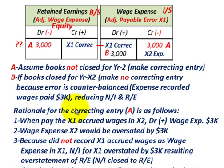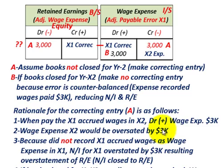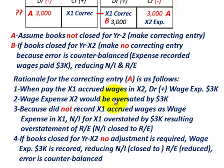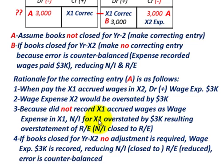The rationale for correcting entry A is as follows. First, when you pay the X1 accrued wages in year X2, you debit or increase wage expense by $3,000 in X2. Second, wage expense in X2 is overstated by $3,000 because it should have been recorded in X1. Third, because you did not record the accrued wages in X1, net income for X1 is overstated by $3,000, resulting in an overstatement of retained earnings — since net income is closed to retained earnings.